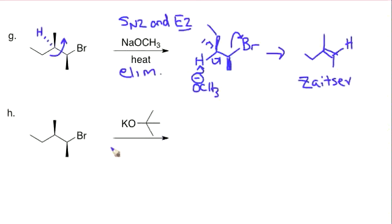Now in this question, question H, the only difference is now we have a bulky base. So we can write K plus and O minus. So this is not good at substitution. It only works for elimination.